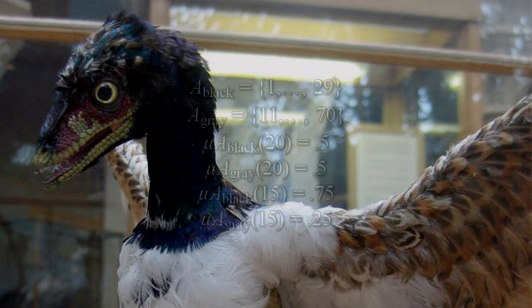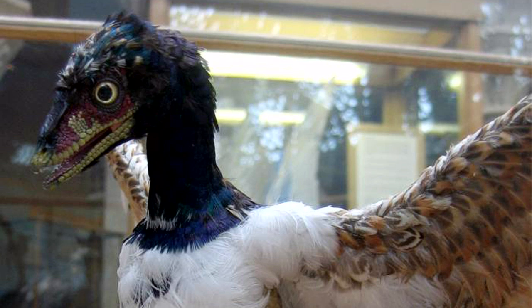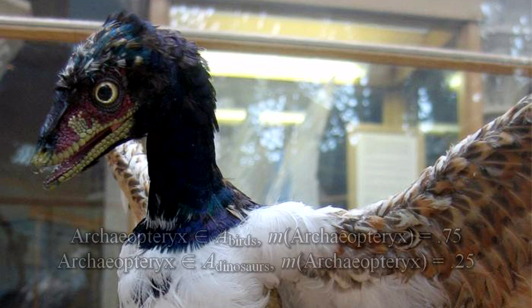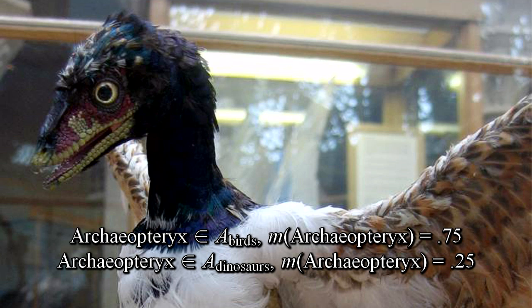So, for example, Archaeopteryx, although officially classified as an ave, would not have a full membership in the bird set because of its dinosaur features. It might be considered 75% in the bird set and 25% in the dinosaur set, or whatever portion of morphological features biologists determine fit with each category.